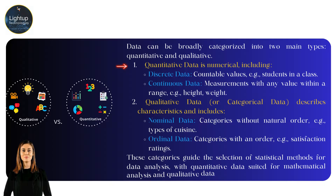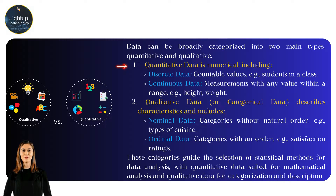First, quantitative data is numerical, including discrete data — countable values, for example students in a class — and continuous data — measurements with any value within a range, for example height and weight.